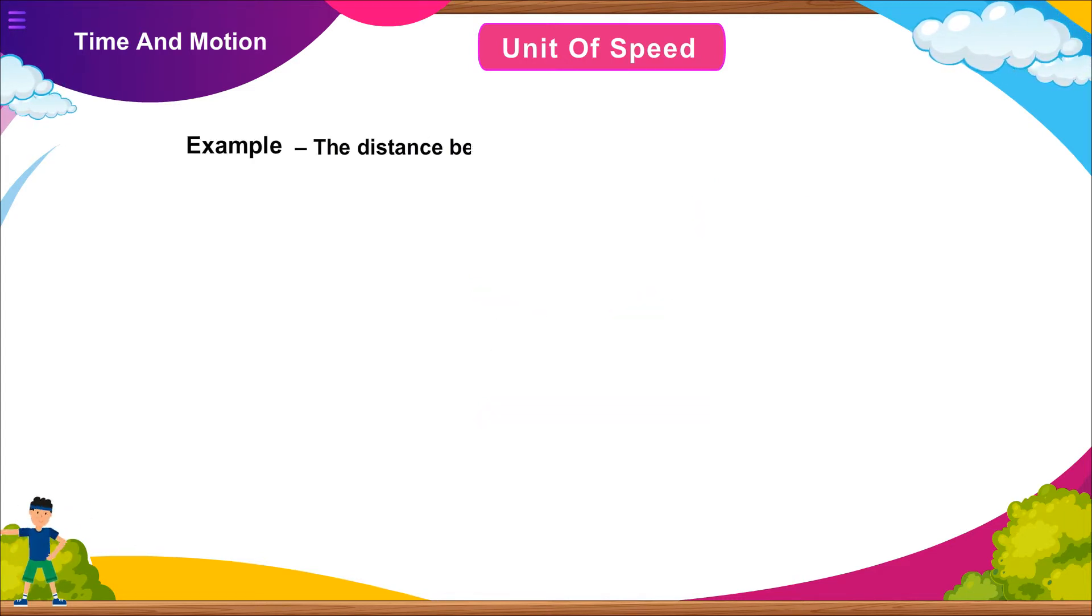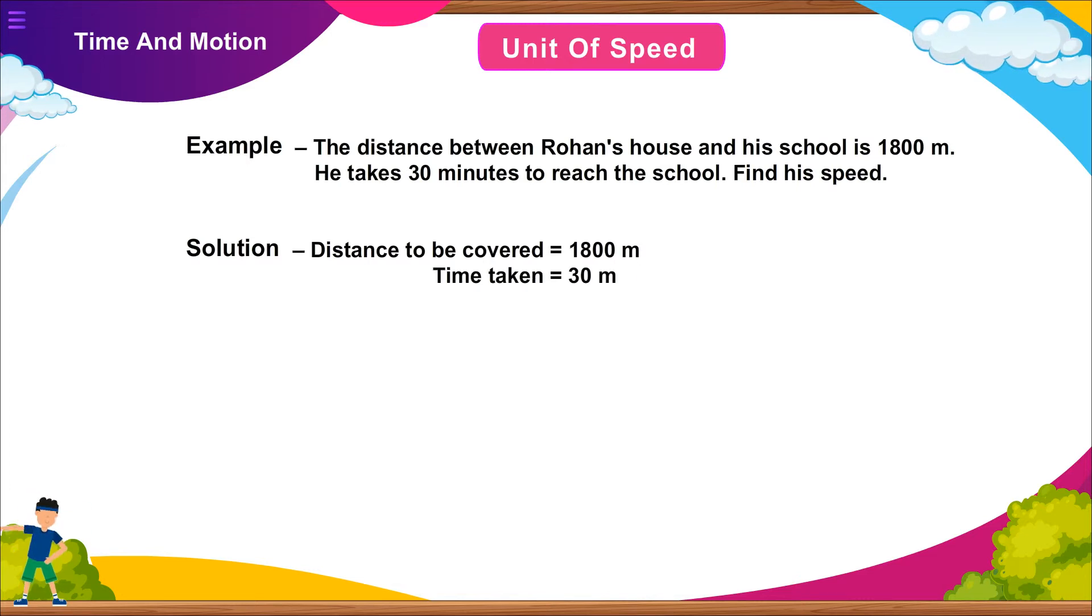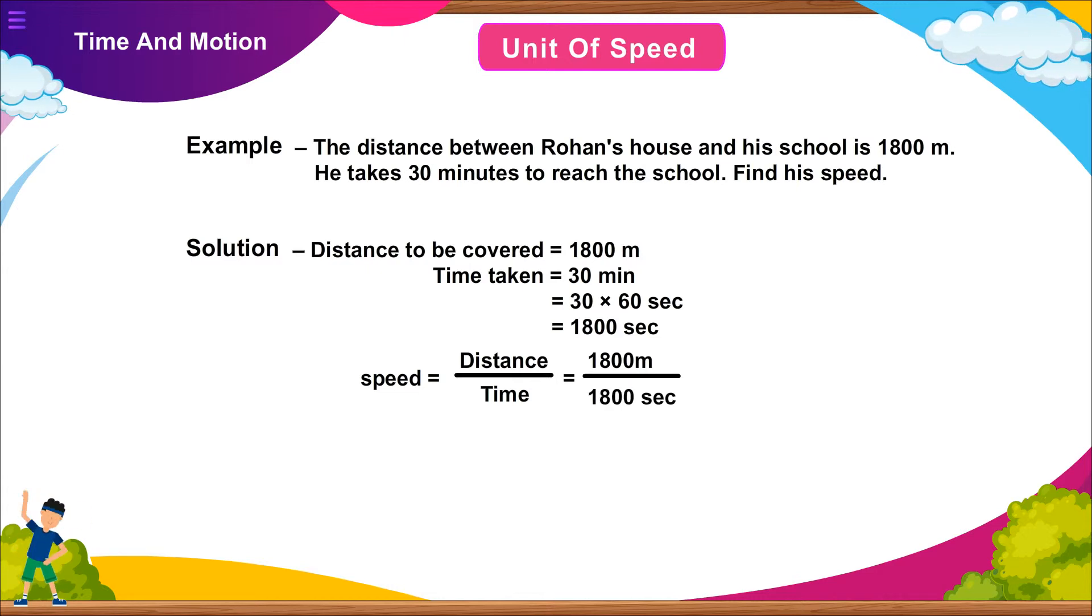Example: The distance between Rohan's house and his school is 1800 meter. He takes 30 minutes to reach the school. Find his speed. Solution: Distance to be covered: 1800 meters. Time taken: 30 minutes equals 30 into 60 seconds equals 1800 seconds. Speed equals distance upon time equals 1800 meter upon 1800 seconds equals 1 meter per second. Rohan travels at a speed of 1 meter per second.